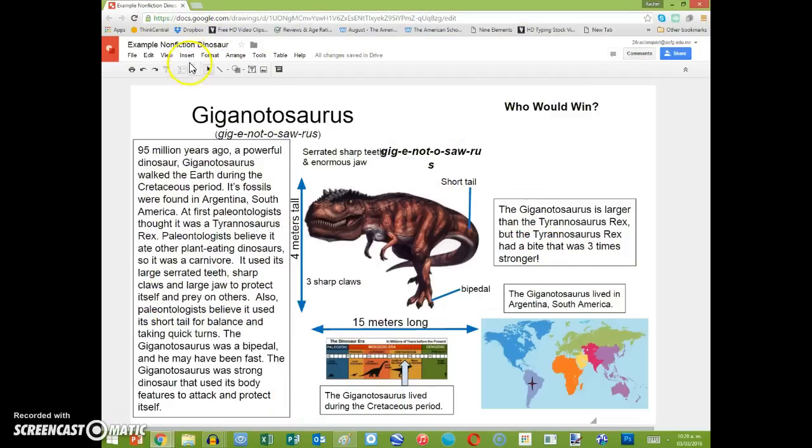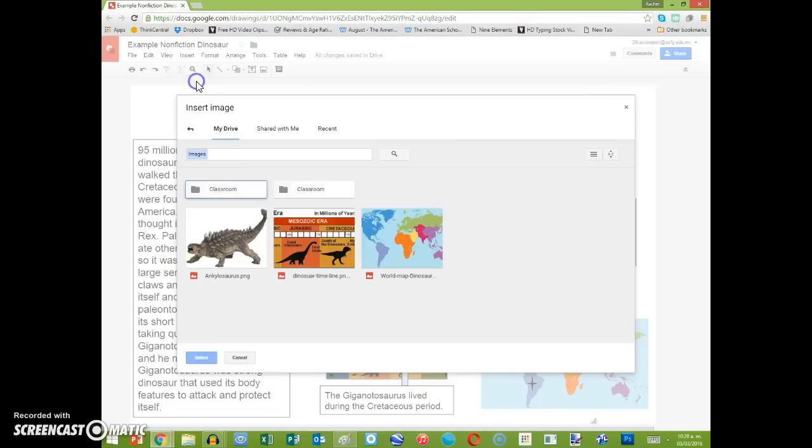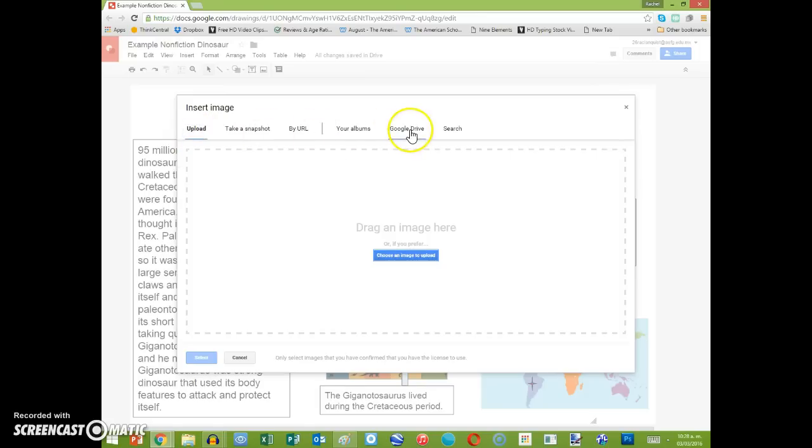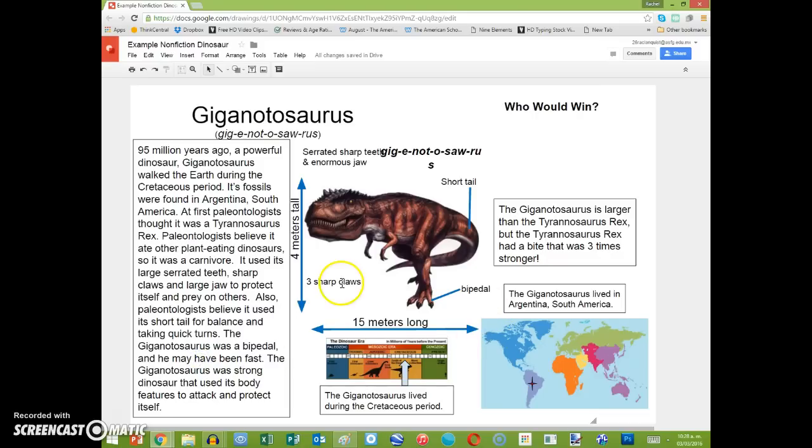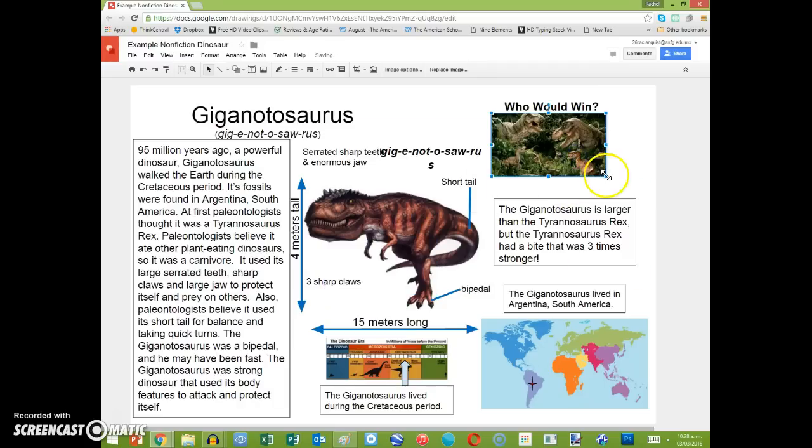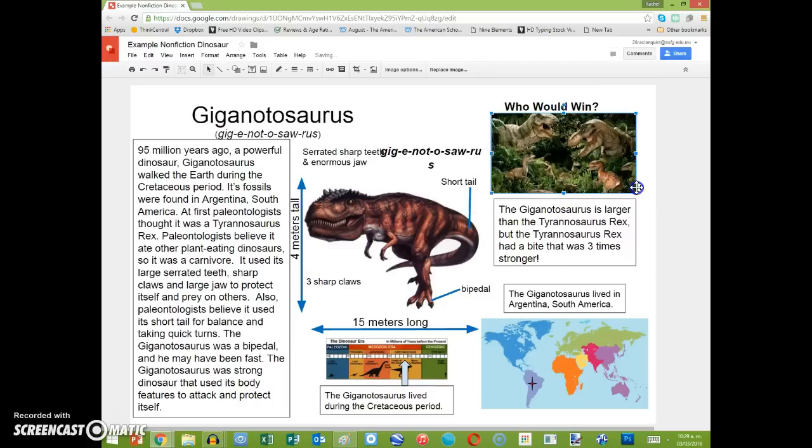and we're going to go insert, image. Make sure that you go to your Google Drive, and then there is Who Would Win. So I click, press select, and then we would have to make it much smaller so it could fit here, or you can always make it bigger to adapt.